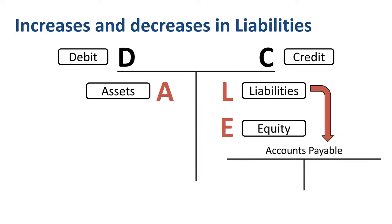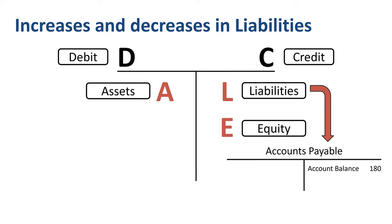Here's an example. Accounts payable — invoices received from suppliers that the company has not paid yet — is a liabilities account. It has a credit balance of 200; this is the amount owed. During the accounting period, the company receives new invoices for 50. Due to this transaction, accounts payable goes up and the credit balance increases. During the accounting period, the company makes payments to suppliers for 70. Due to this transaction, accounts payable goes down; the debit to the account pulls the balance down. At the end of the accounting period, you take the opening balance of 200 credit, add the new invoices of 50 credit, and deduct the payment to suppliers of 70 debit, to get to the new account balance of 180 credit.